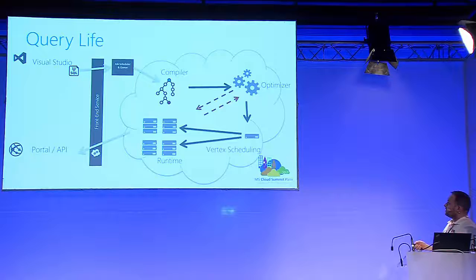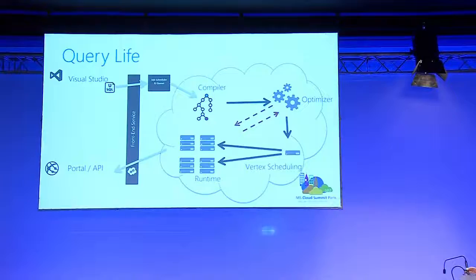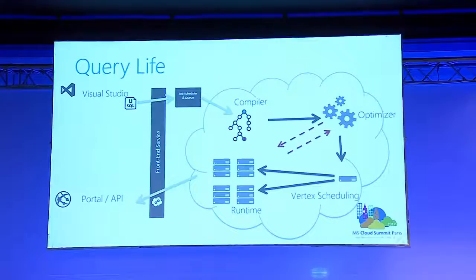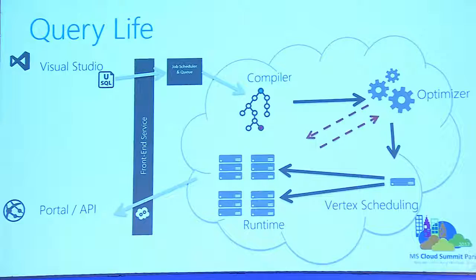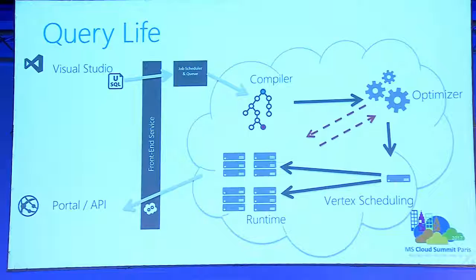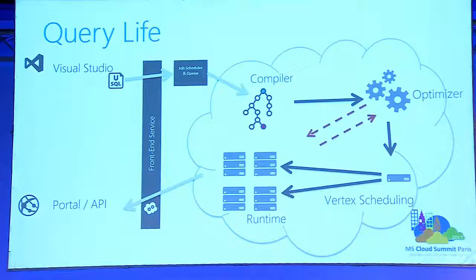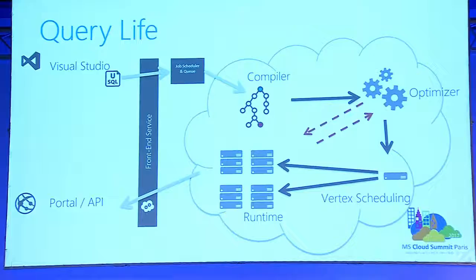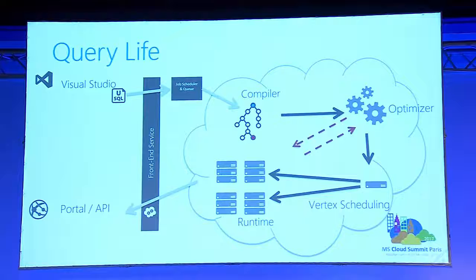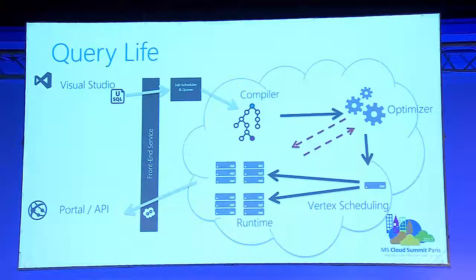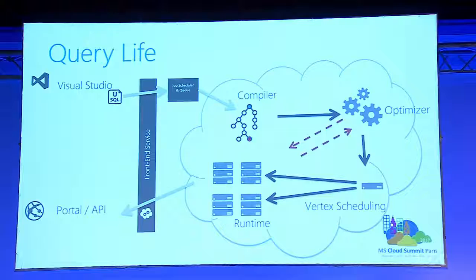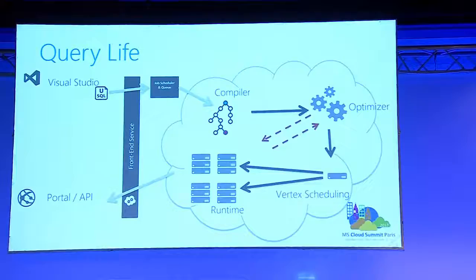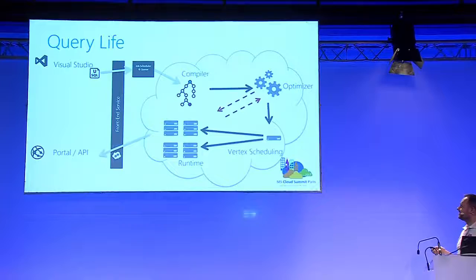The query lifecycle of a U-SQL script: you can write your U-SQL in Visual Studio or from PowerShell, then submit the script into a job scheduler queue. It gets compiled, optimized, then vertex scheduling handles the partitioning and parallelism of the job. Then we have the runtime, and then you have the output — either into an output file via the portal or you can download it using PowerShell. I would recommend using PowerShell for many of these tasks, because using the portal is pretty tedious.